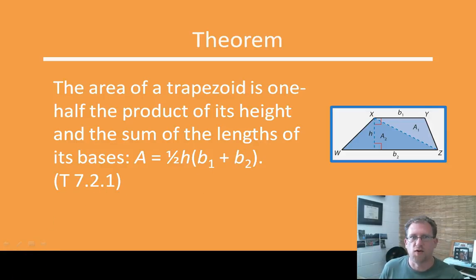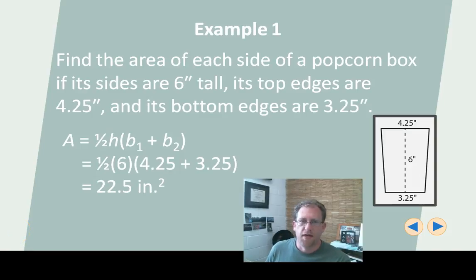That's the area of a trapezoid. Let's do an example. Here we have a trapezoidal popcorn box side. Because I know you've always wanted to know, how many square inches is that popcorn box side? I know, I know, it's a question of the ages. Here we're going to answer it for you. Finally, right? We have a popcorn box 6 inches tall, and the bottom of the popcorn box side measures 3.25 and the top measures 4.25.